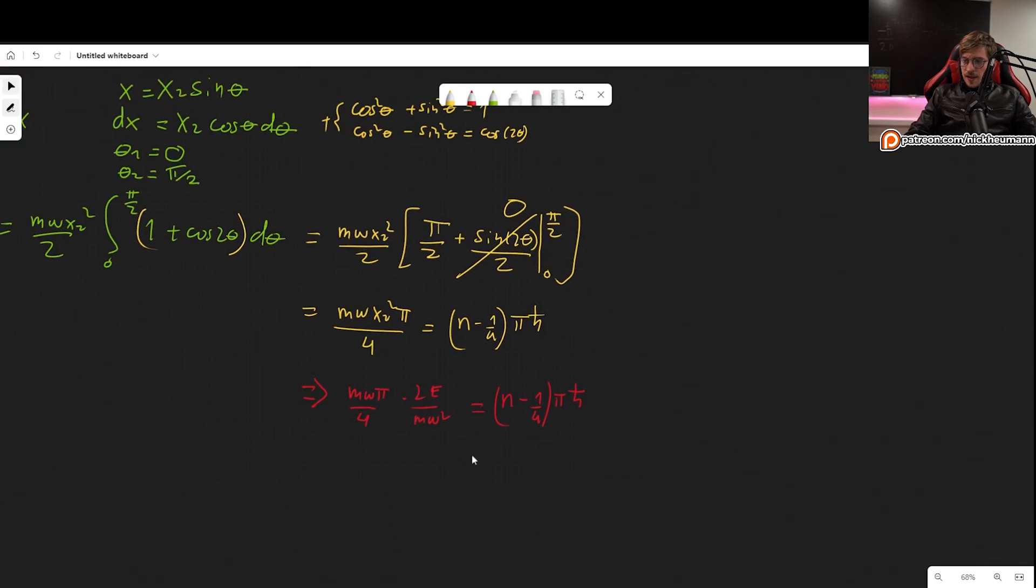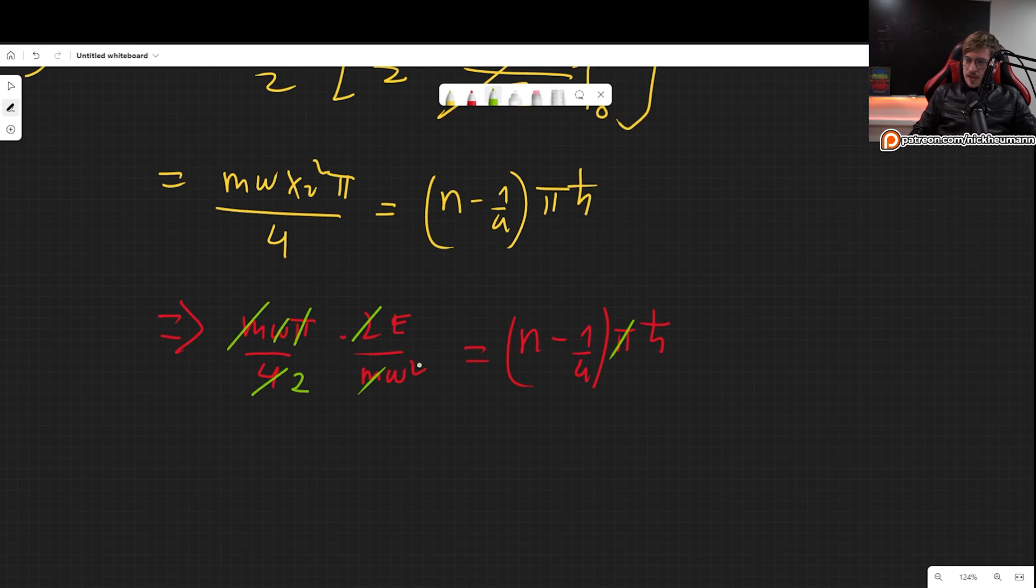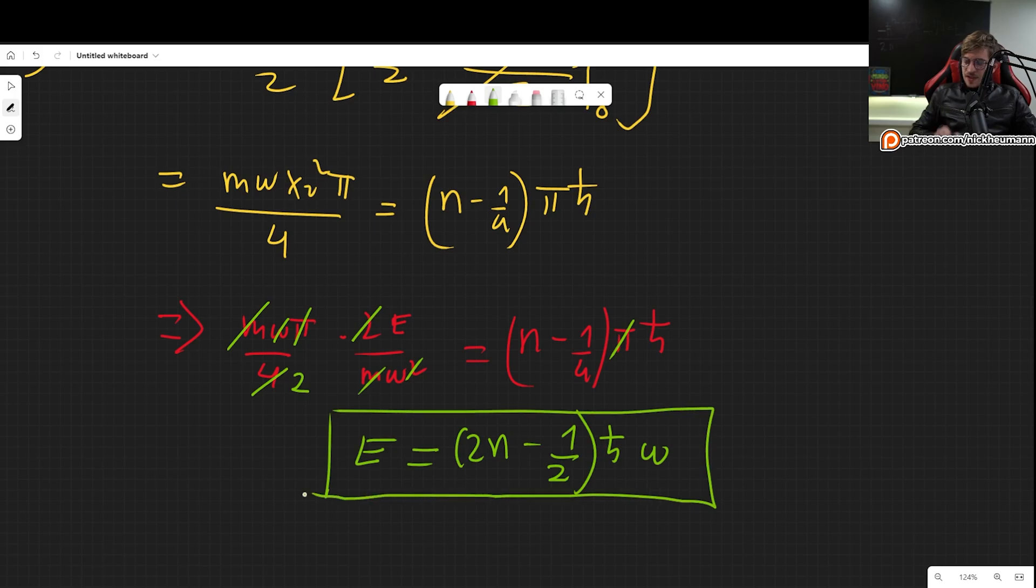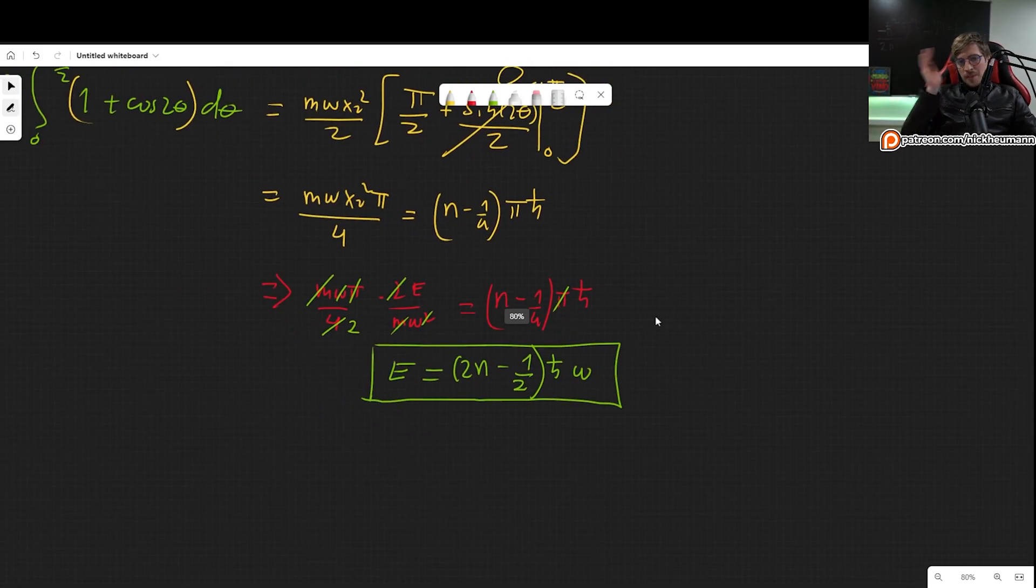Now let's take a closer look. We have pi on either side, so they cancel out. We have 2 here and 4 here, so we get a 2. m m omega omega squared. So the energy will be, we multiply by 2, so we get 2n minus 1 half times h bar omega. And there we go. This is actually the same value for the energy that we had found way back when we were just starting with perturbation theory.